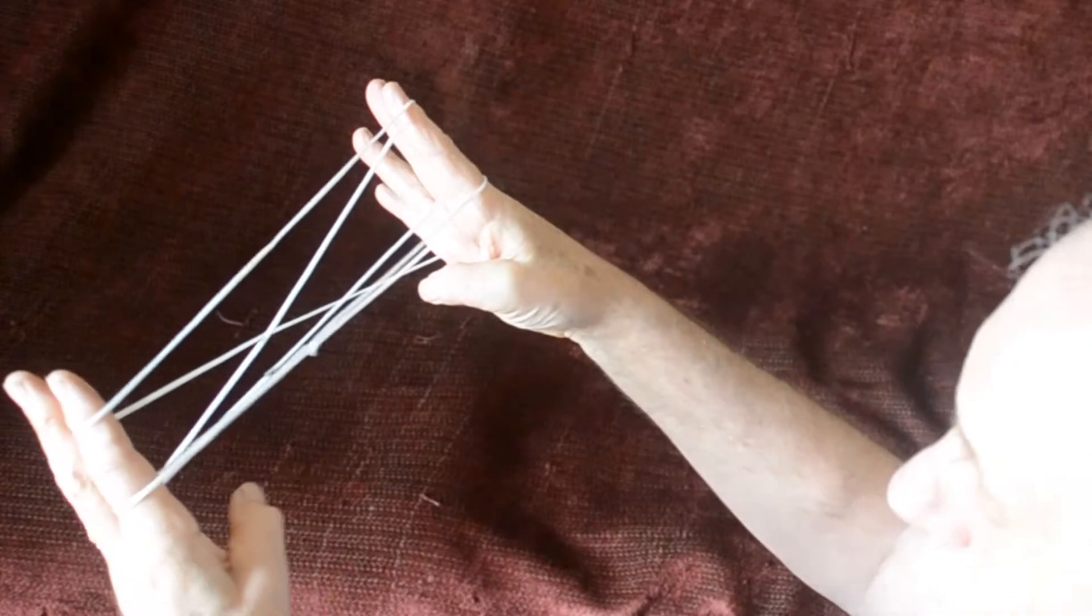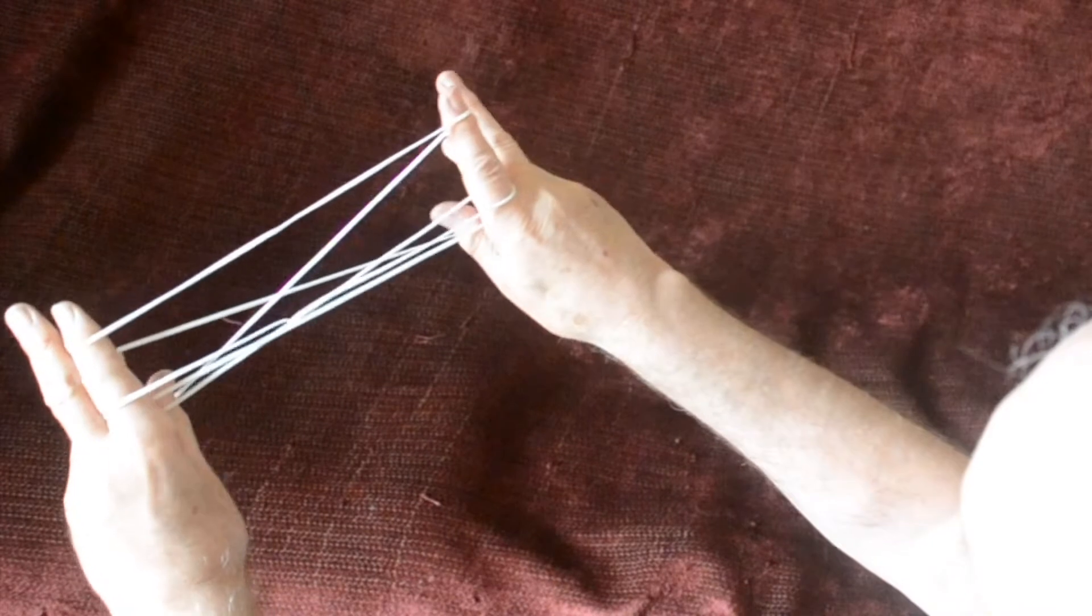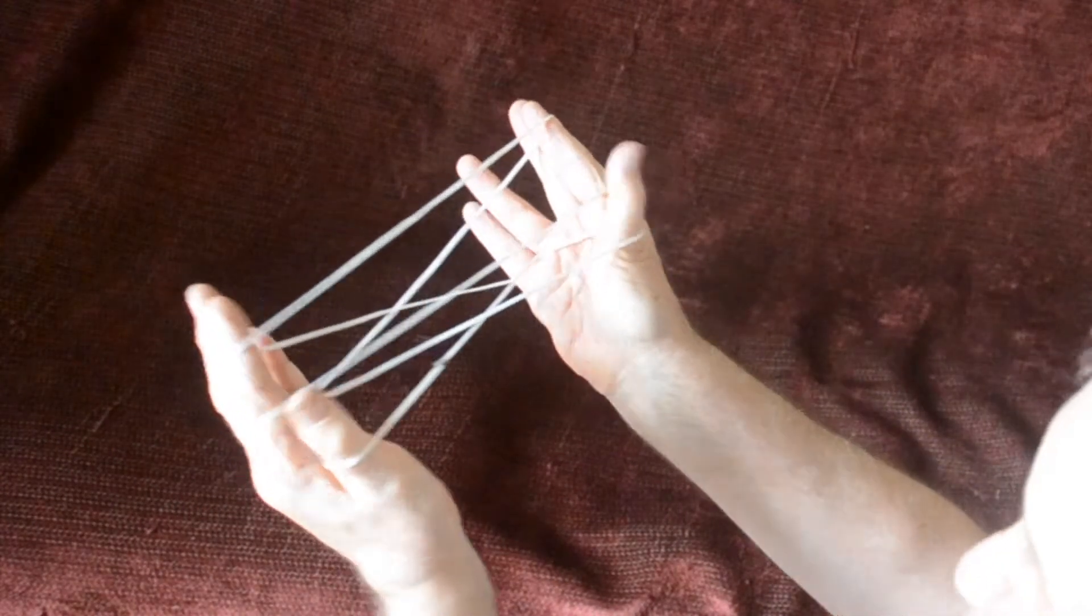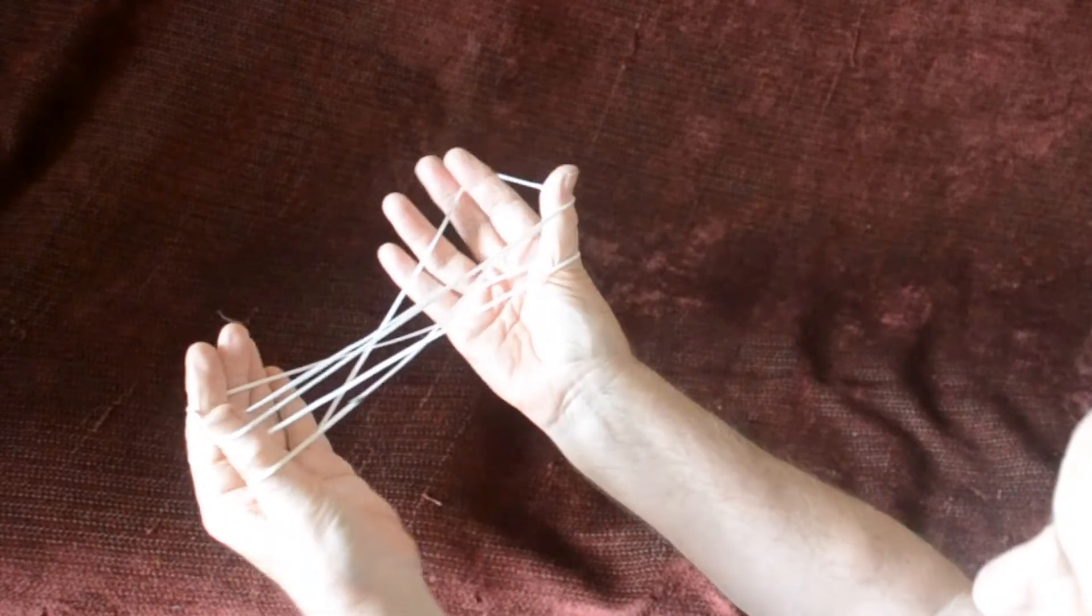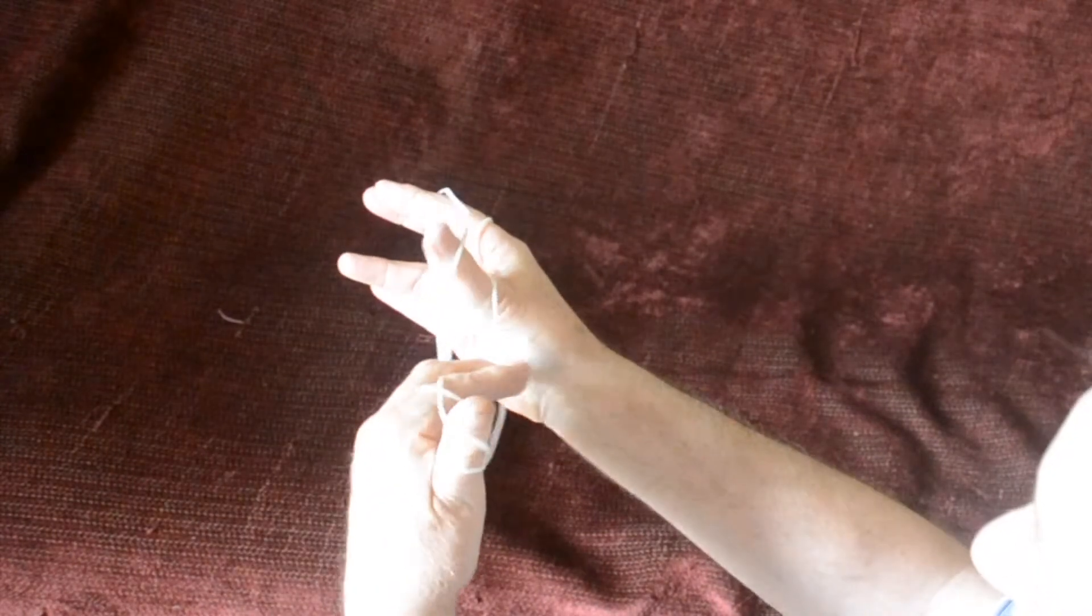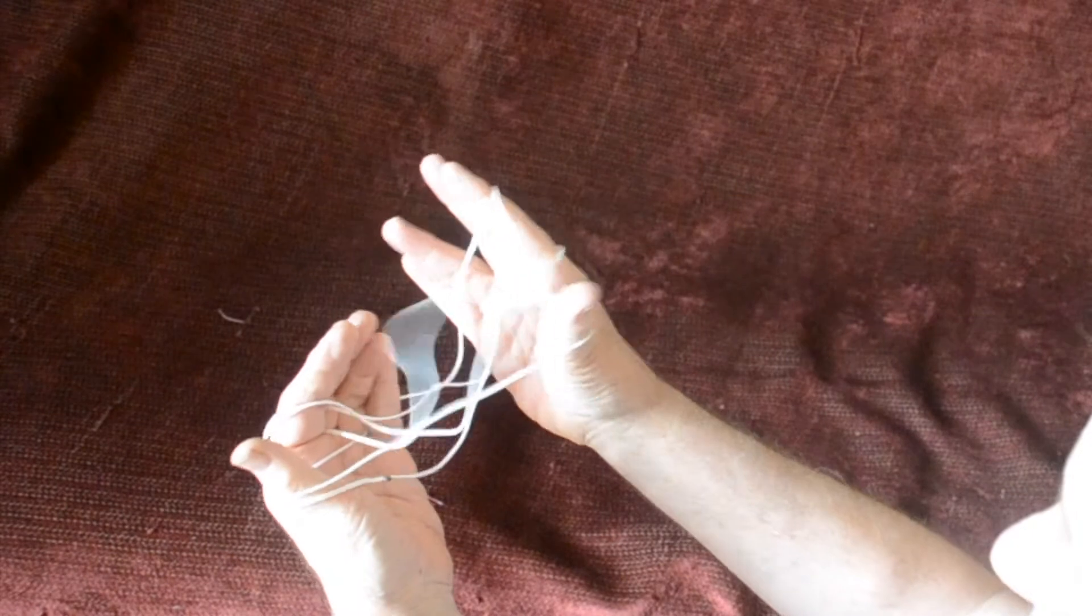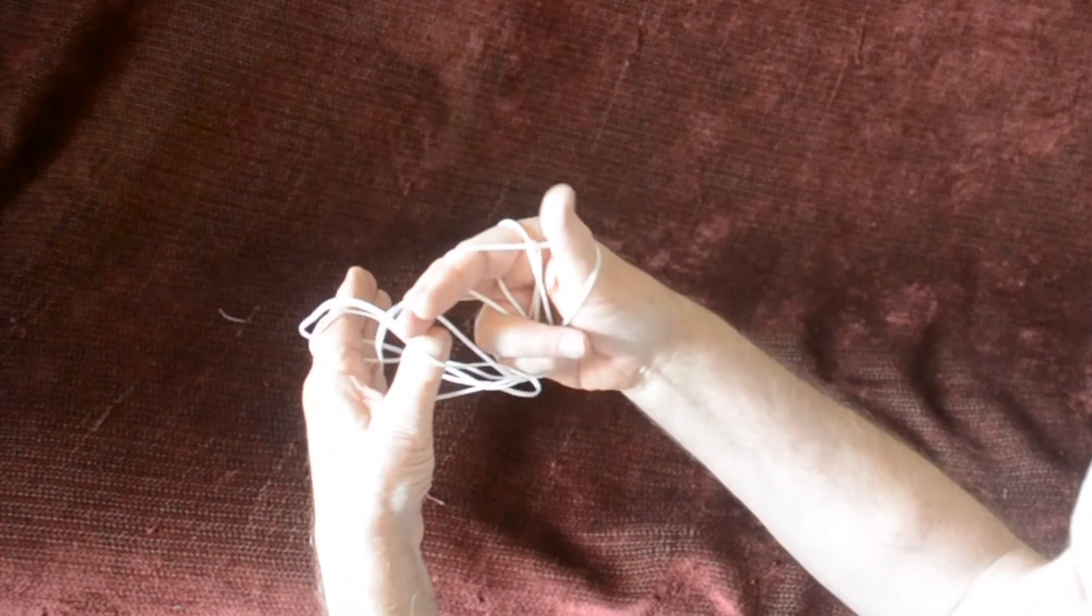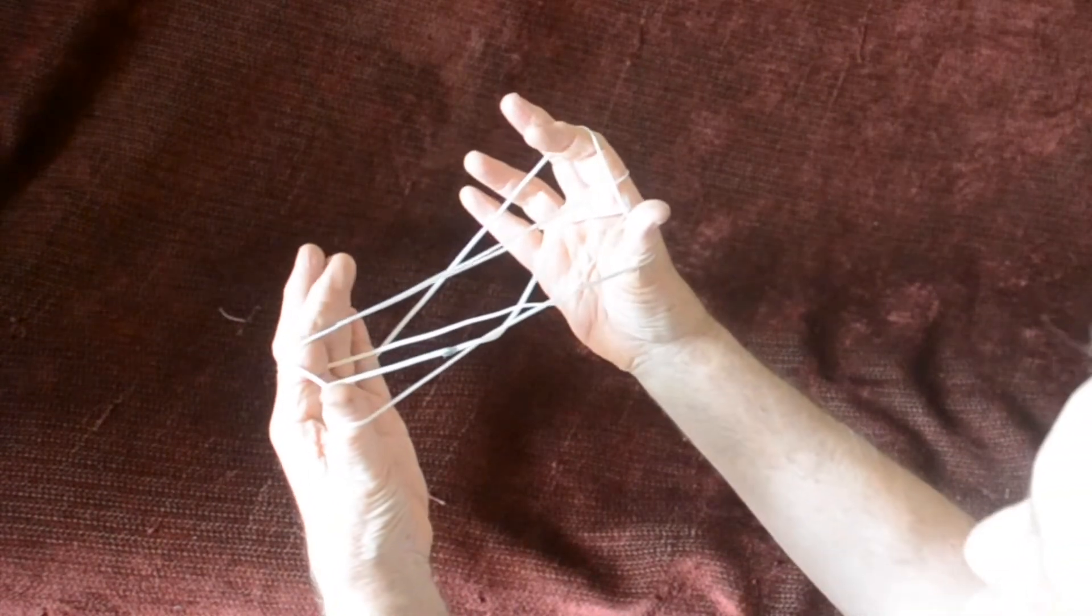Now the thumbs are going to go into the lower little finger loop, draw back that near string, and then go into the upper index loop and pick up the near string. Then do a Navajo move. The lowest loop comes up and over the thumb on the left hand side and on the right hand side. Like so, that's it. And palm to palm position again.